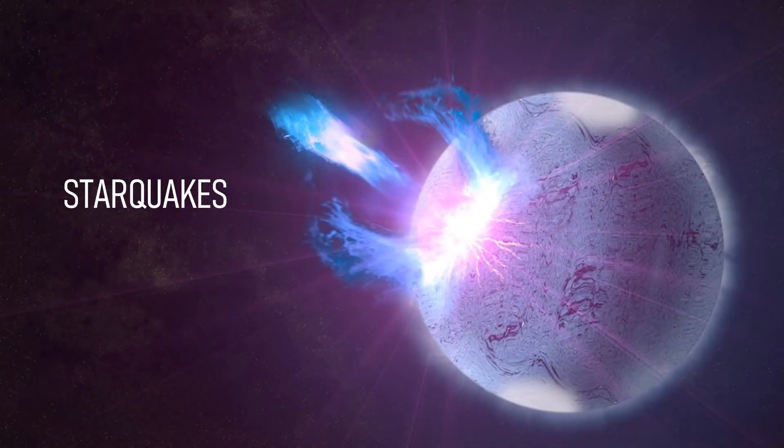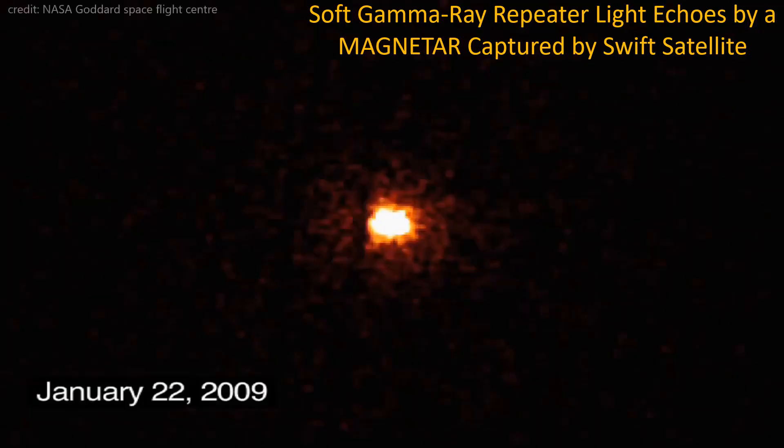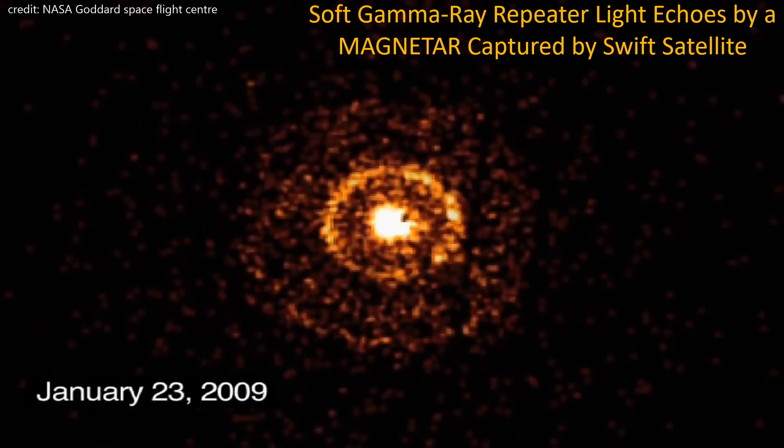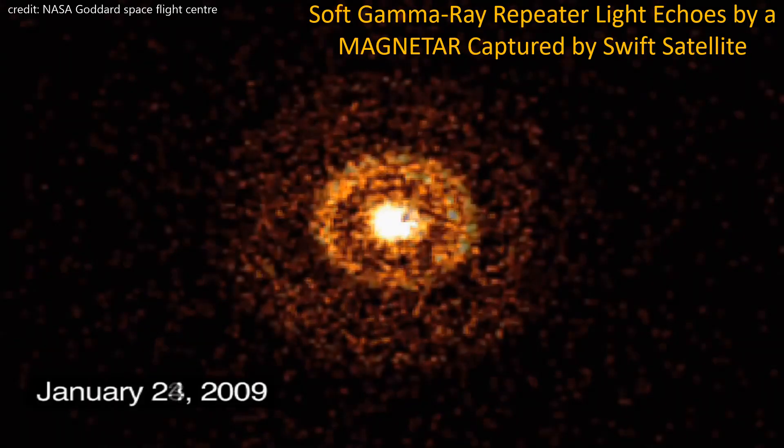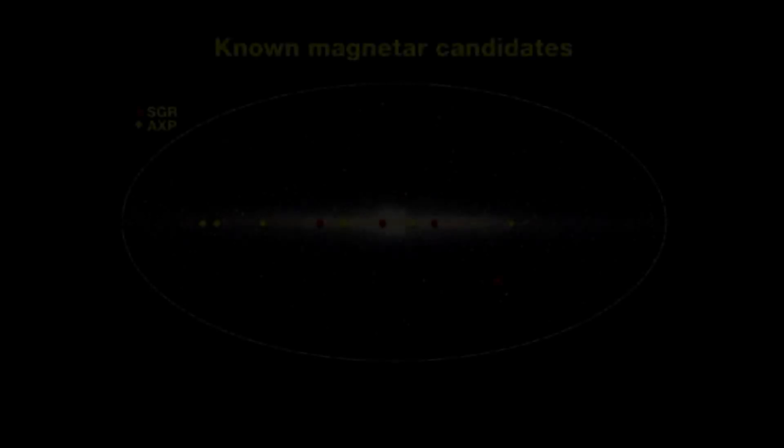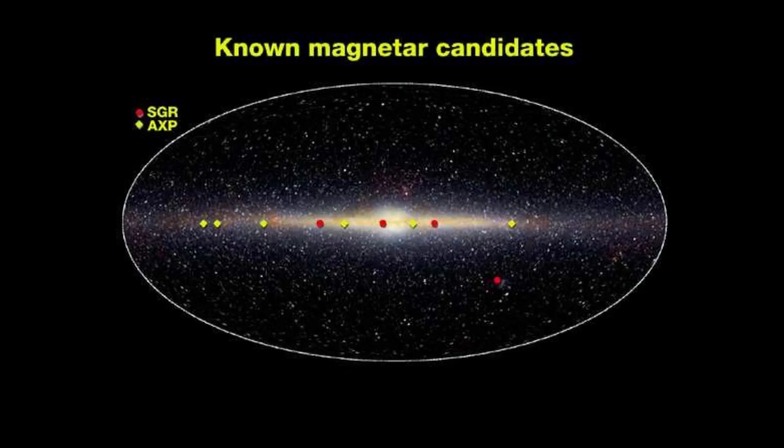Like earthquakes, magnetars experience starquakes. Starquakes triggered on the surface of the magnetar restock the magnetic field which lead to extremely powerful gamma ray flare emissions. The number of inactive magnetars in the Milky Way alone is 30 million or even more.